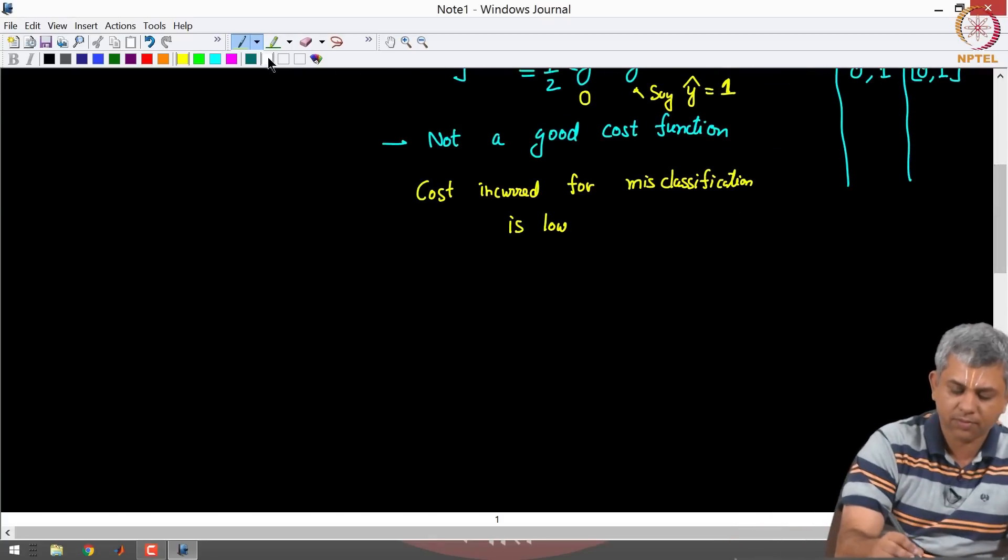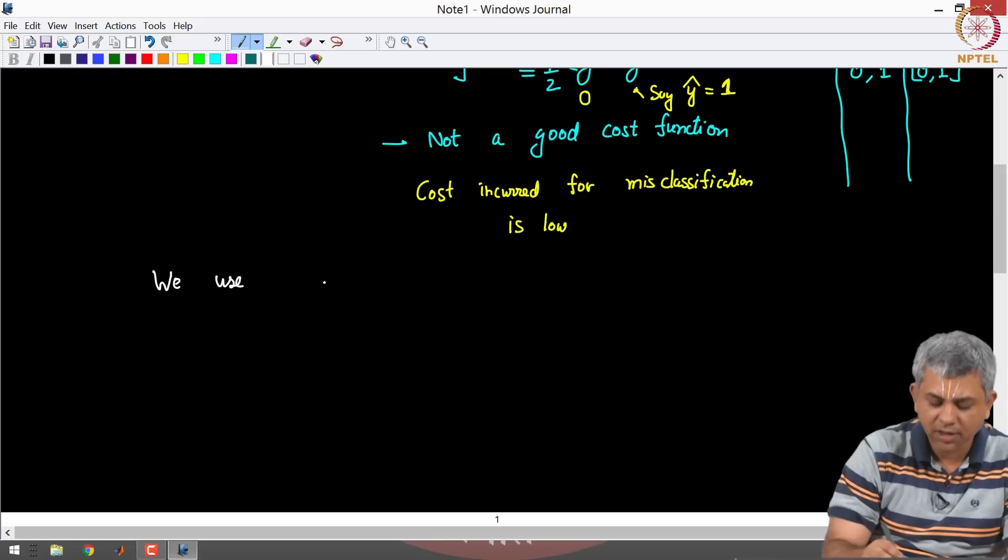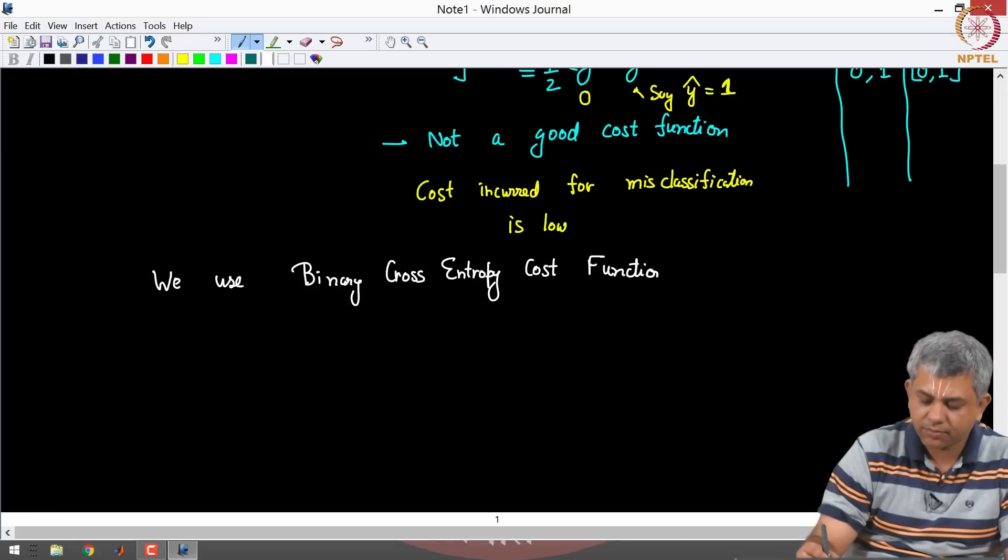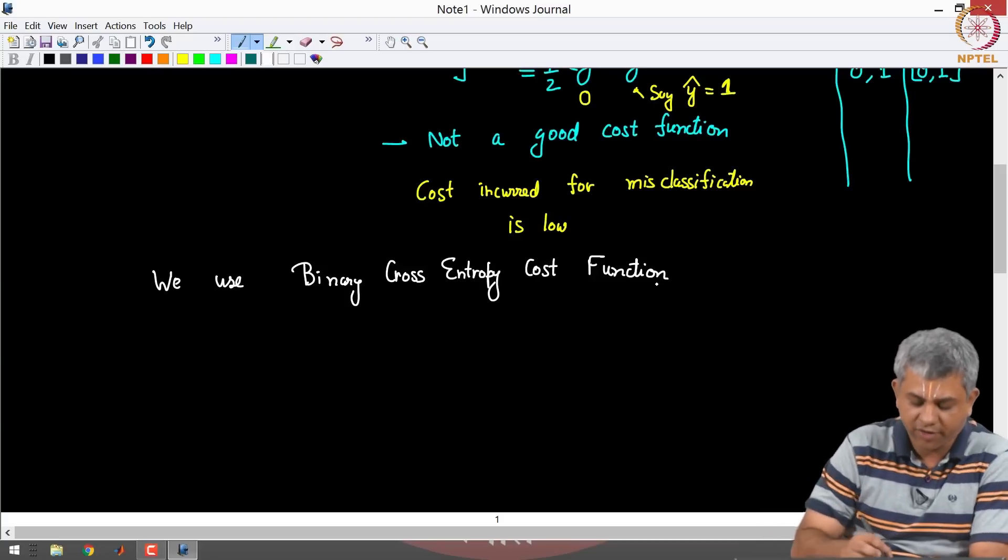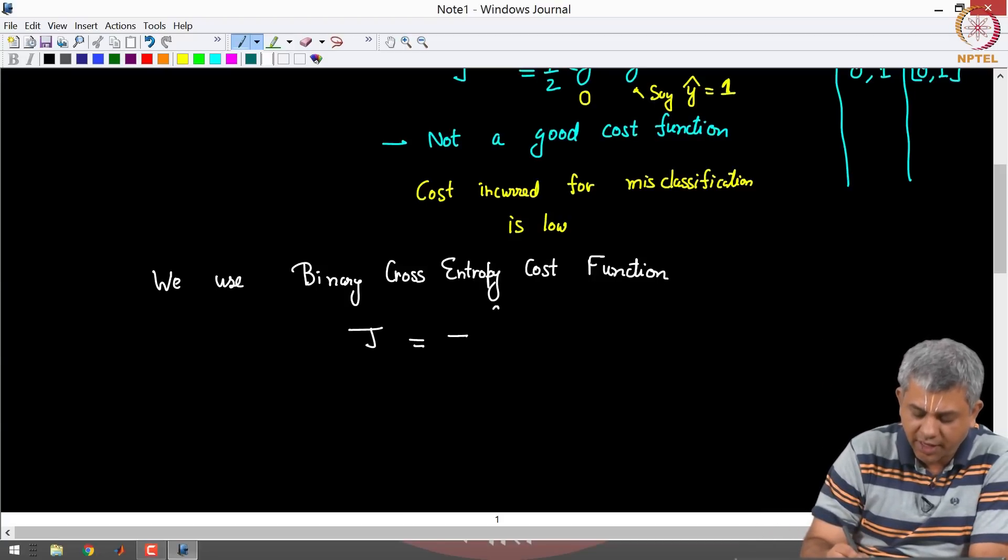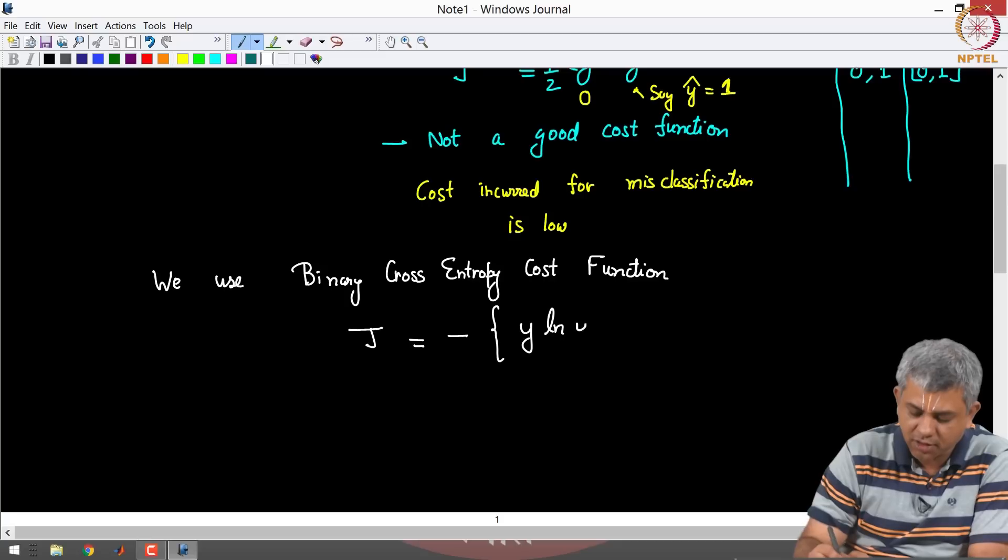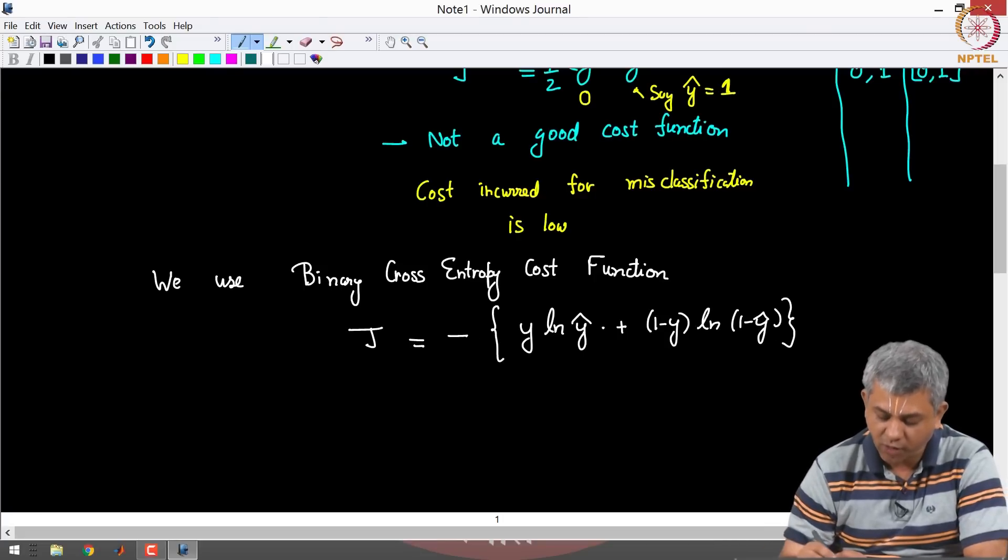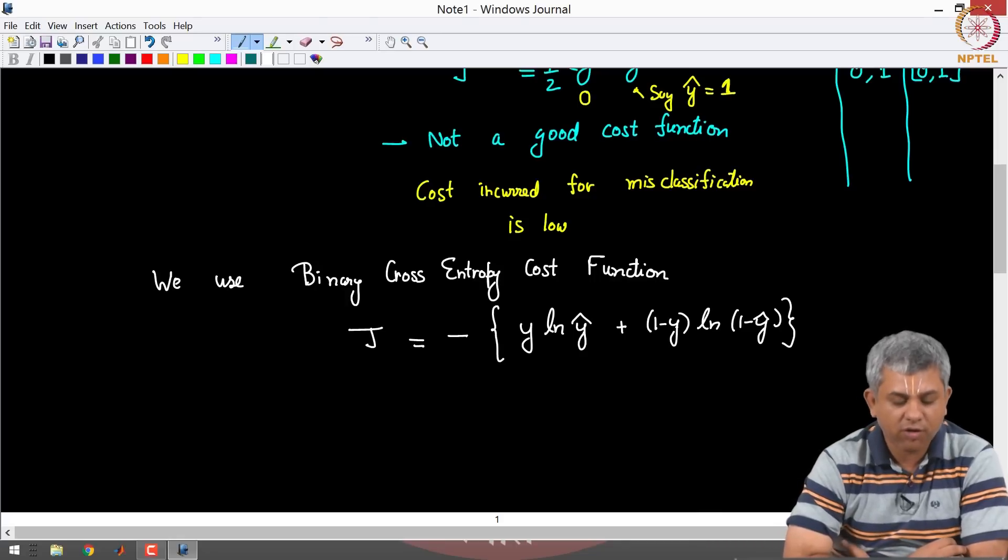We instead use something called the binary cross entropy cost function. The form of that cost function is different. So J is, there is a negative outside, minus Y times ln Y hat plus 1 minus Y times ln 1 minus Y hat. Now we will come to the reasons for each of these terms shortly, including Y, there is a minus and Y, both these terms are sitting there.